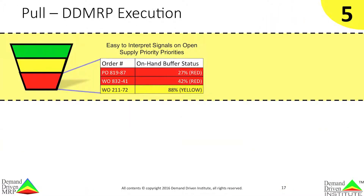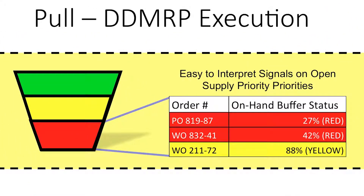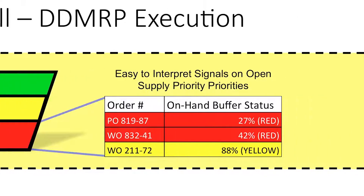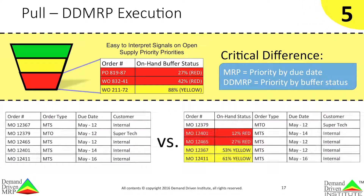This brings us to the final component of DDMRP: visible and collaborative execution. In DDMRP, execution is about the management of open supply orders. DDMRP uses easy-to-interpret signals on open supply priorities against the on-hand buffer position. The lower the on-hand level, the higher the threat to maintaining flow and the higher the execution priority. A critical difference between MRP and DDMRP is that MRP assigns priority by due date, while DDMRP assigns priority by buffer status — one based on arbitrary and constantly shifting due dates, the other showing real-time threats to flow that is highly visible and intuitive.